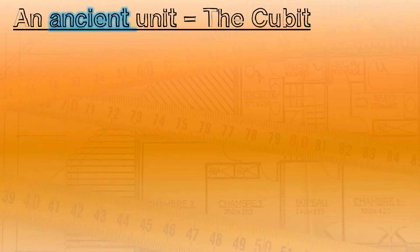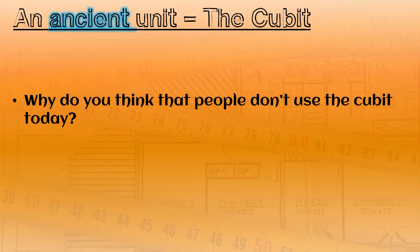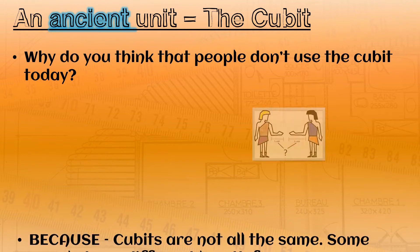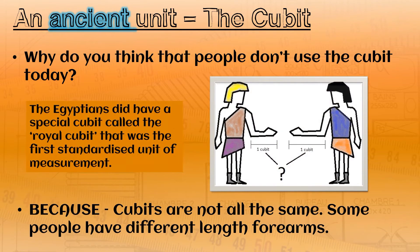The cubit was an ancient unit. Why do you think that people don't use the cubit today? The reason we don't use the cubit today is because cubits are not all of the same. Some people have short forearms and some people have long forearms and that changes the unit.